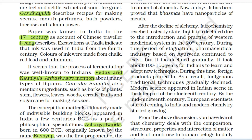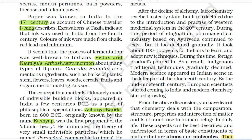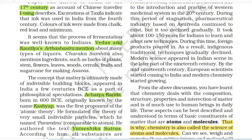After the decline of alchemy, iatrochemistry reached a steady state but it too declined due to the introduction and practice of the western medicinal system in the 20th century. During this period of stagnation, pharmaceutical industry based on Ayurveda continued to exist but it too declined gradually. It took about 100 to 150 years for Indians to learn and adopt new techniques. During this time, foreign products poured in. As a result, indigenous traditional techniques gradually declined.